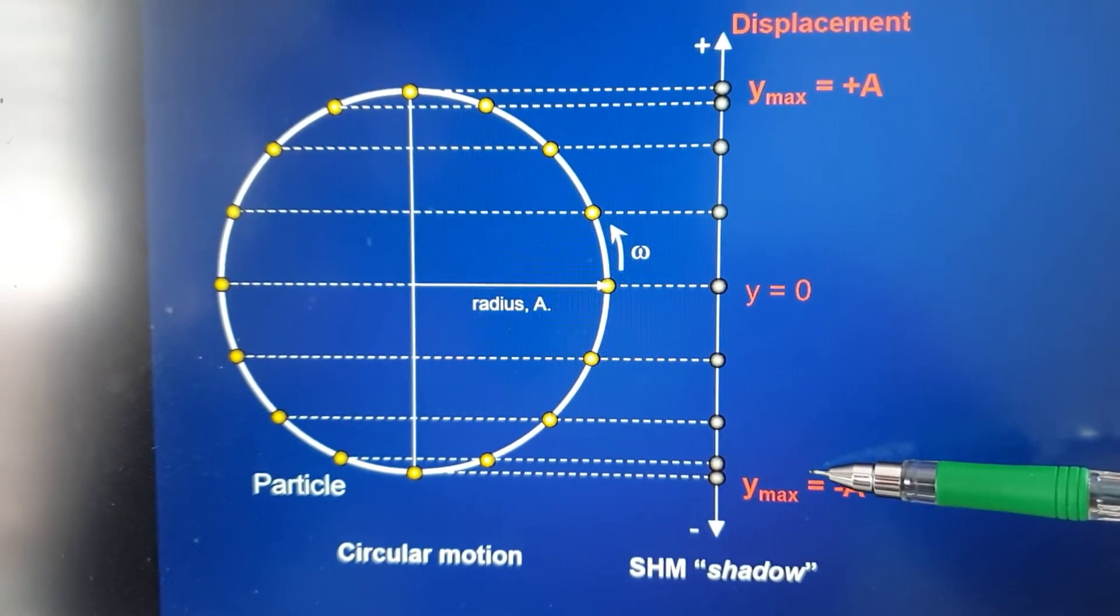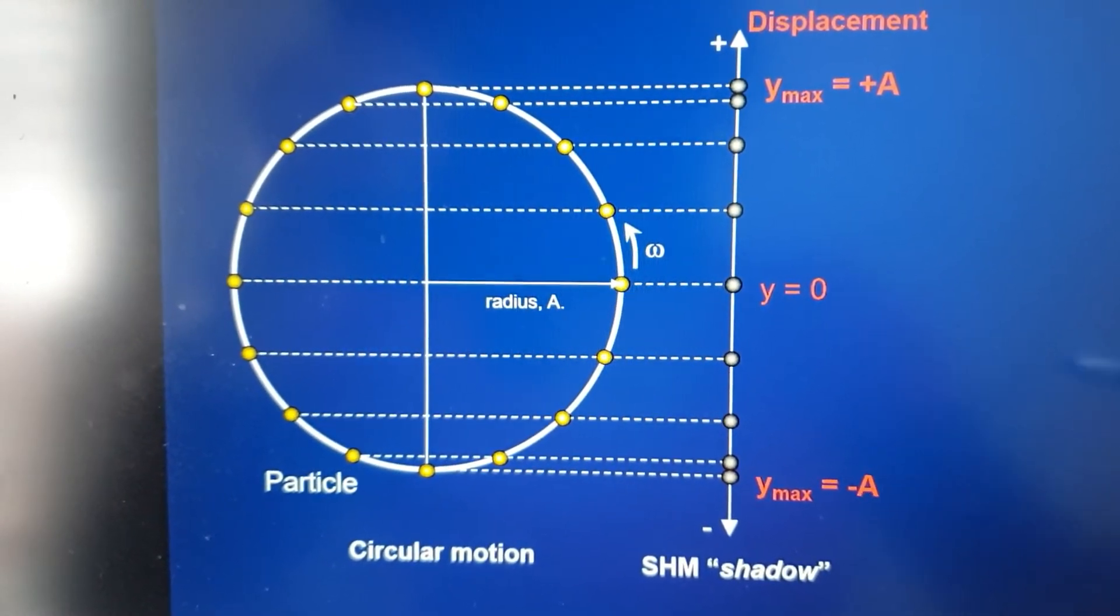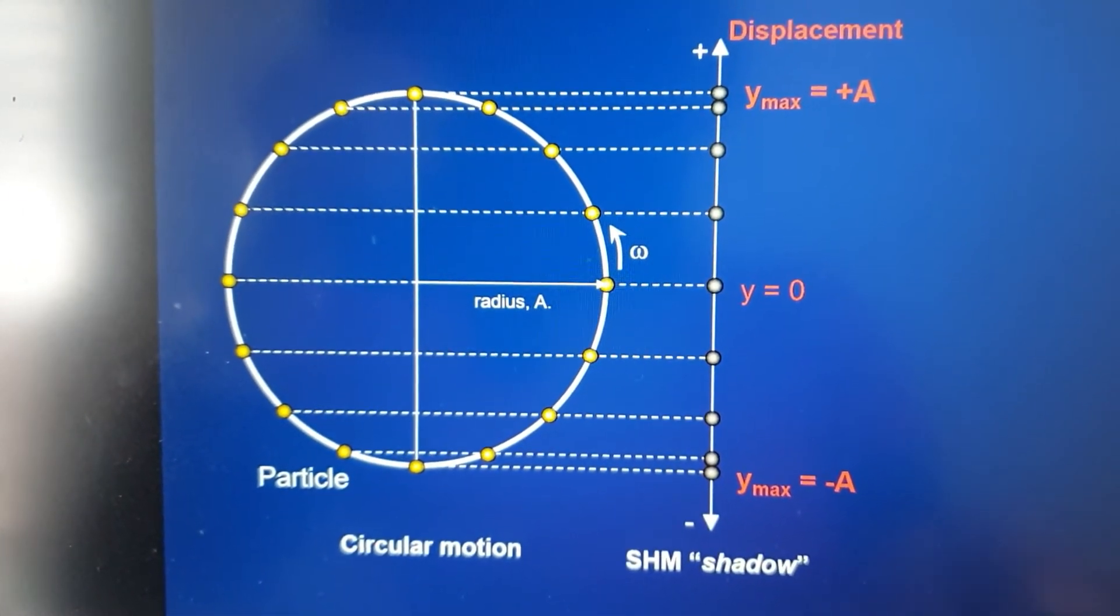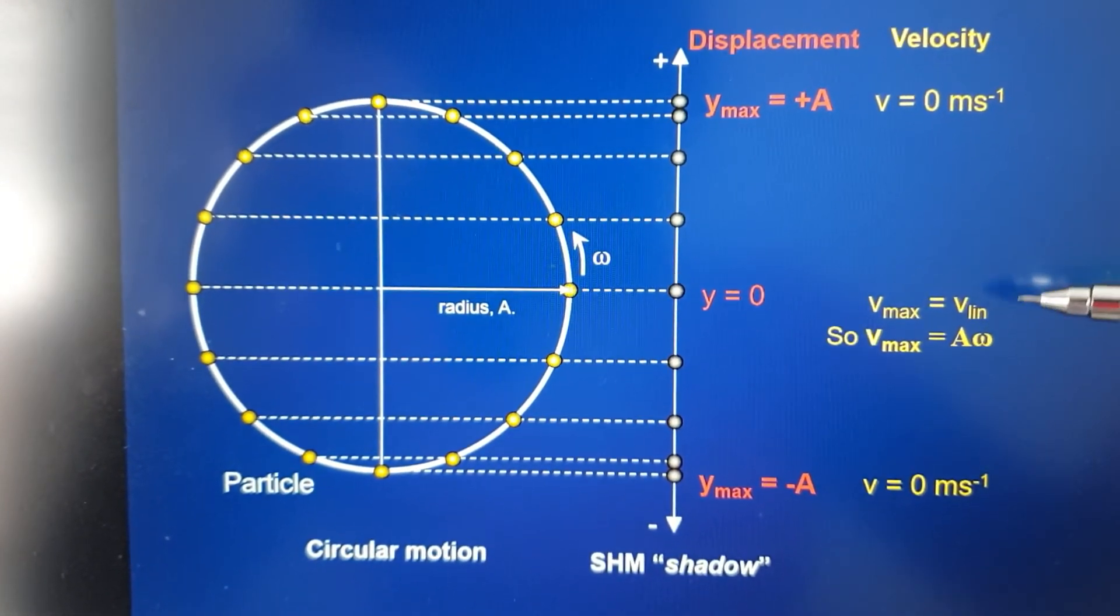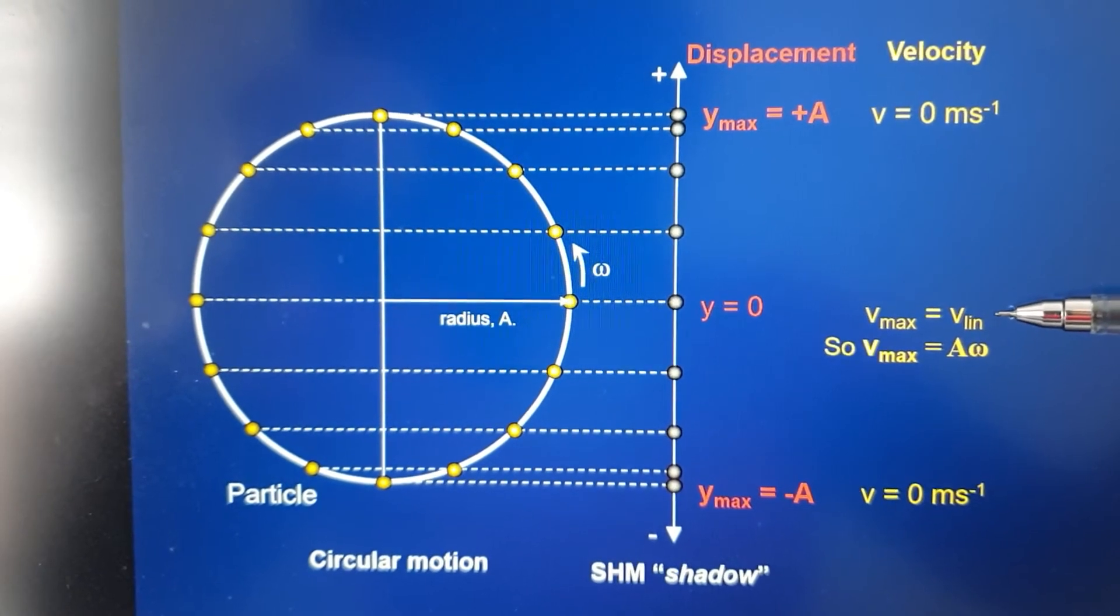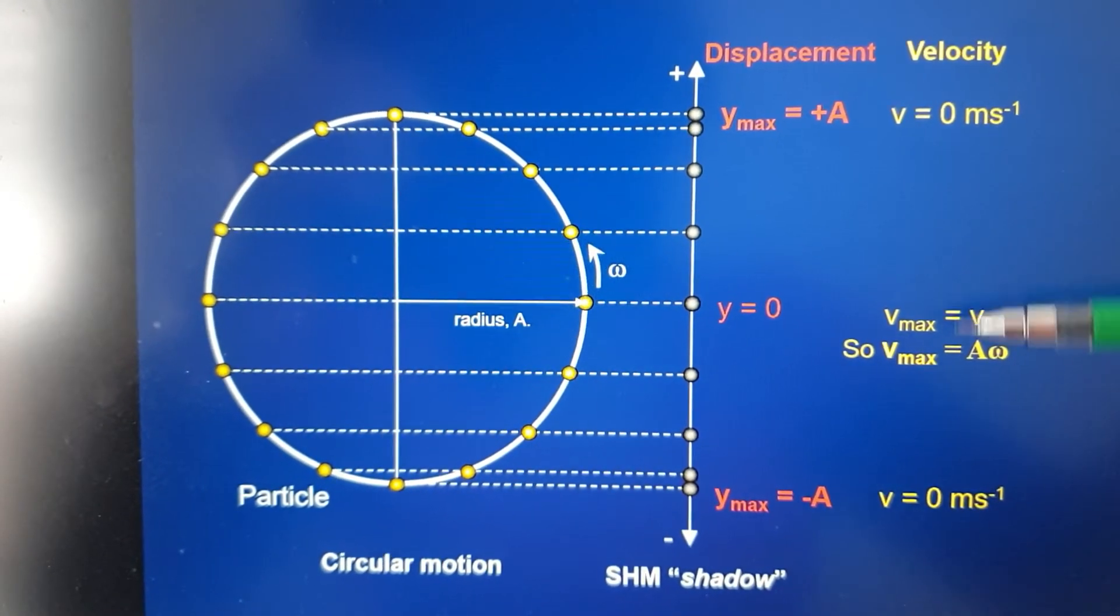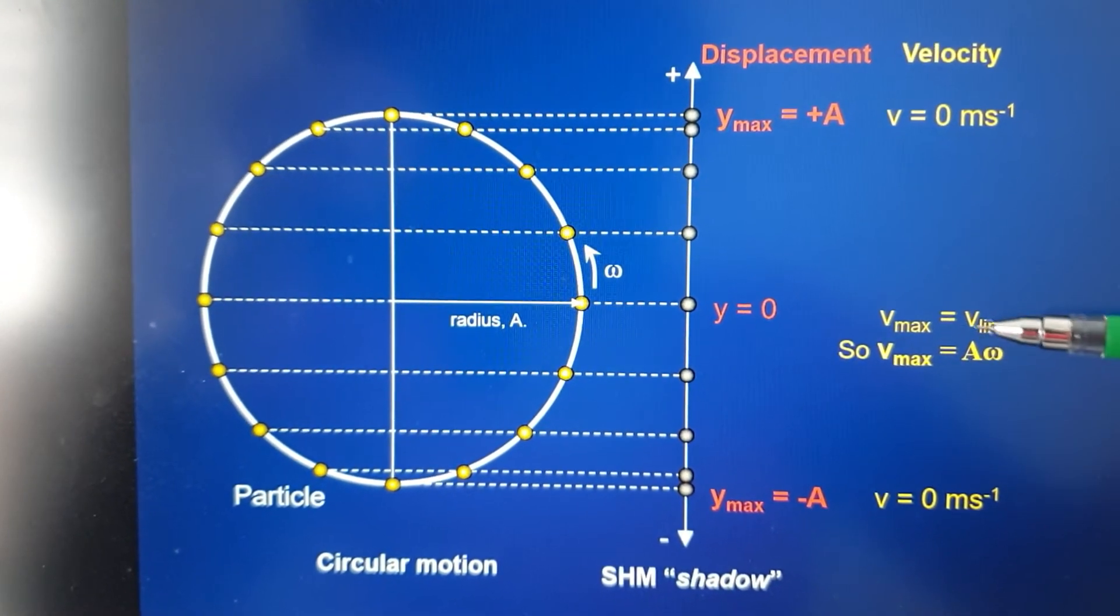Looking at what happens to the velocity at these three positions, your velocity is a maximum at the center, at the equilibrium position, zero at the two ends. I'll derive this for you in a bit.